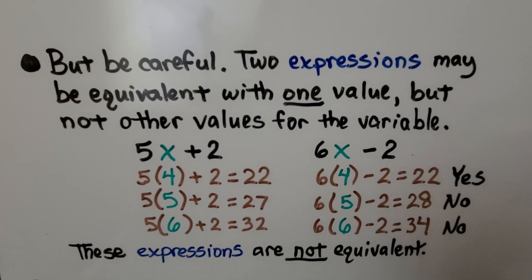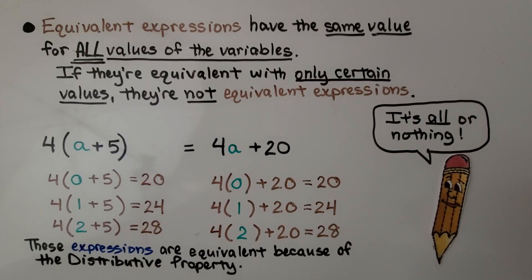Expressions are equivalent if we get the same answer — the same result — no matter which value we assign to the variable. Equivalent expressions have the same value for all values of the variables. If they're equivalent with only certain values, they're not equivalent expressions. We need to get the same result no matter what the value of the variables are.